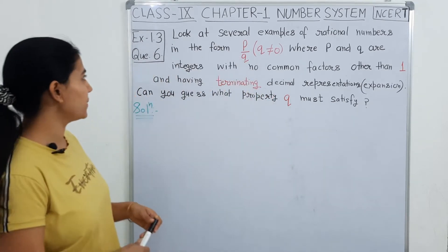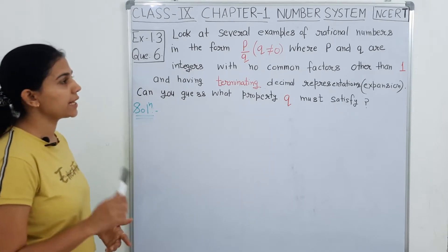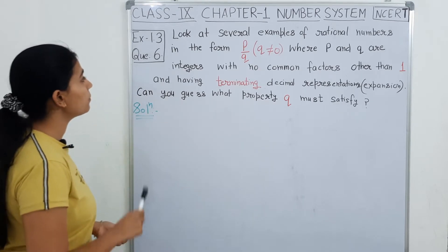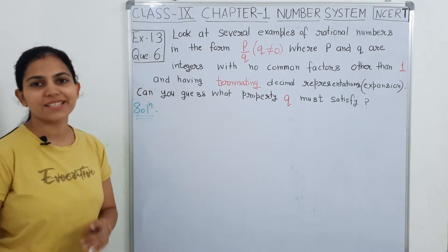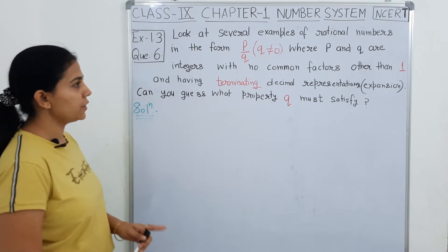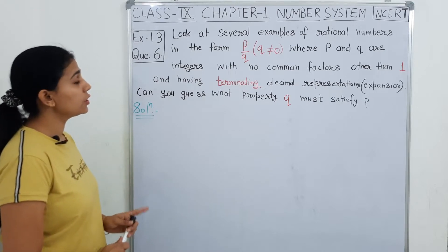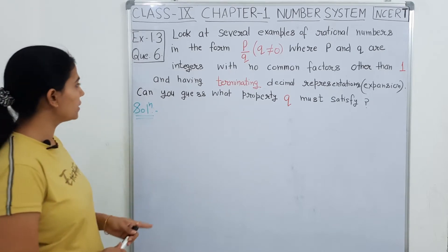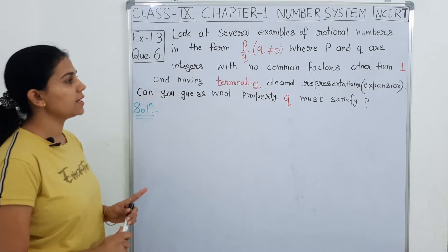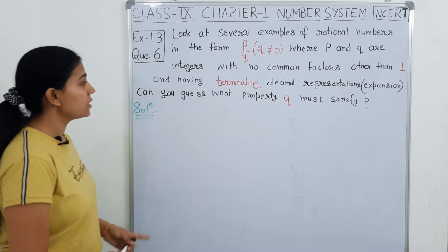So, let's see the statement. Look at several examples of rational numbers in the form P upon Q, where Q doesn't equal to 0, and P and Q are integers with no common factors other than 1 and having terminating decimal expansion. Can you guess what property Q must satisfy?